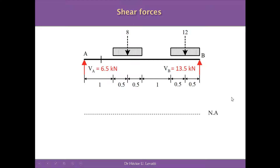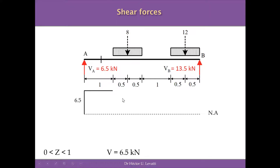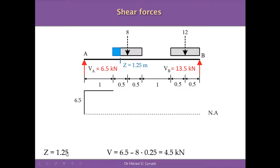To calculate the shear forces, we work interval by interval, starting with the interval from 0 to 1. Considering a cross-section in the middle of this interval and summing shear forces to the left side of the structure, the only force is 6.5 kN positive. This is the shear force value for every cross-section from A to 1.